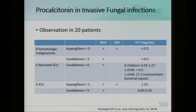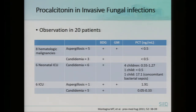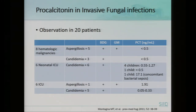Another study is an observational study in 20 patients, eight of whom had hematologic malignancies — aspergillosis in five patients and candidiasis in three patients. They found that procalcitonin in these patients was really low, less than 0.5, but with positive beta-D-glucan and galactomannan. Similarly, in neonatal ICU patients who had candidemia, the level of procalcitonin was really low, except in one child who had a level as high as 17 — and that child had concomitant bacterial sepsis. In six ICU patients with aspergillosis and candidemia, the procalcitonin level was also low, less than 2, but with positive beta-D-glucan and galactomannan. This means procalcitonin may be helpful in diagnosing fungal sepsis when its level is low.